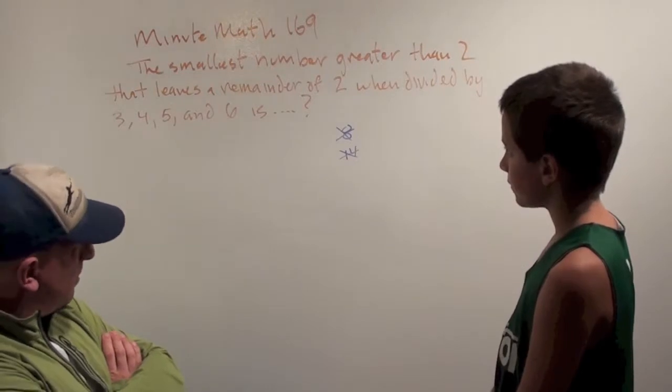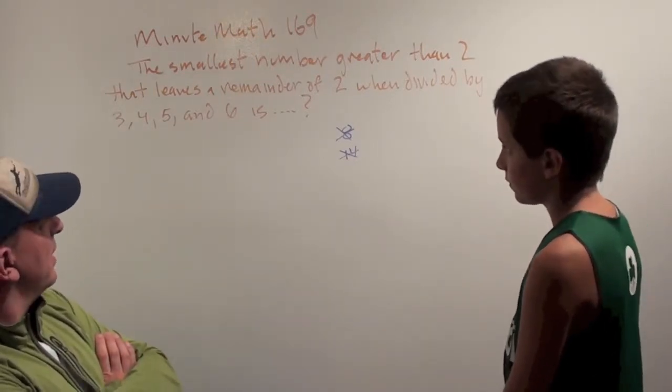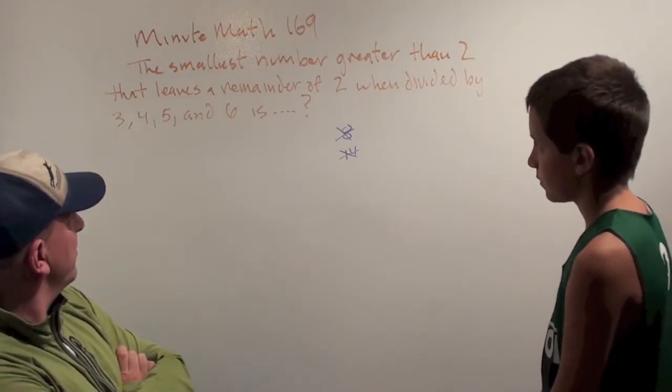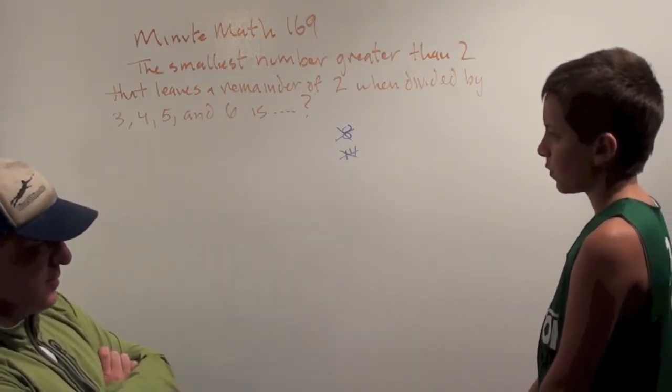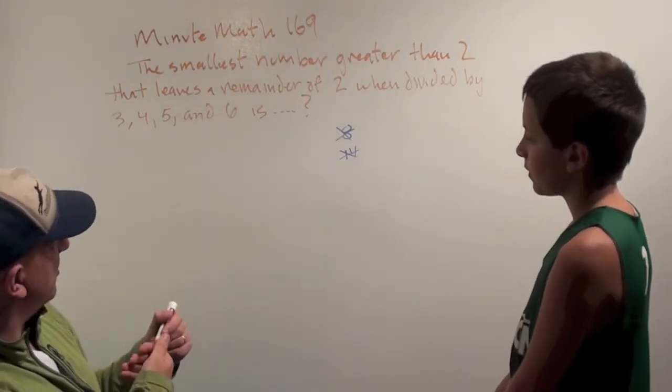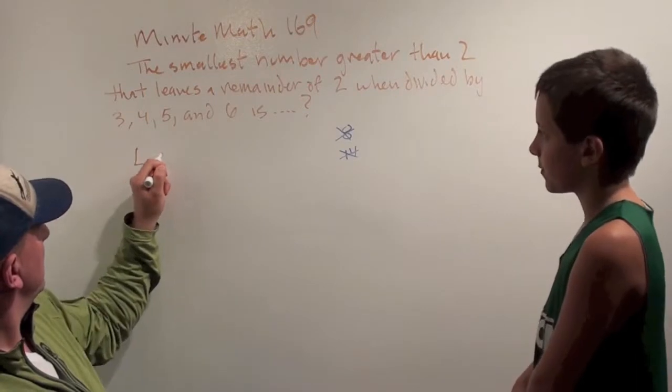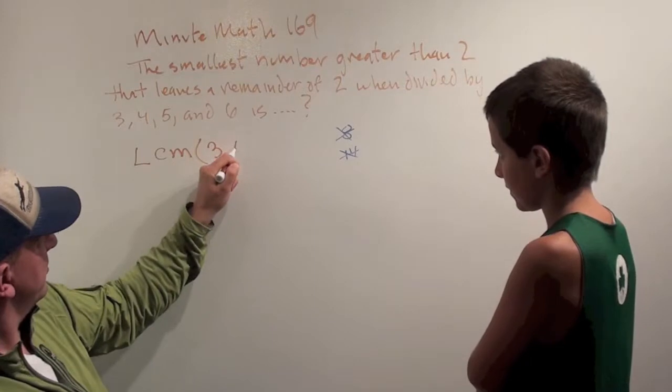Okay. Now, does that remind you of anything? How can we find a number that's a multiple of 3, a multiple of 4, a multiple of 5, and a multiple of 6? We can do the least common multiple. Ah, the least common multiple or the LCM. It's been a long time since we talked about that, but you did remember it, which is cool.